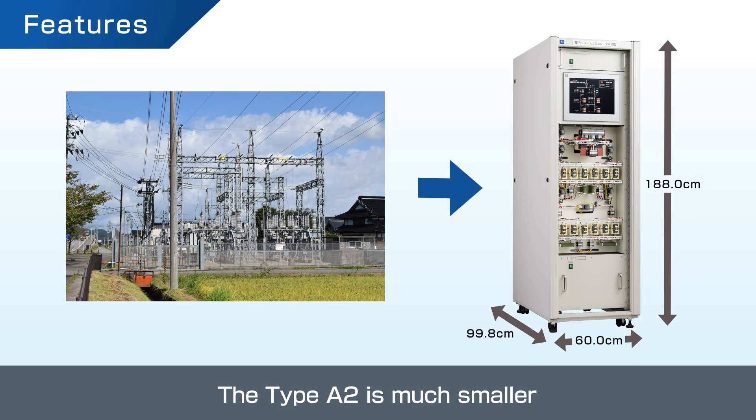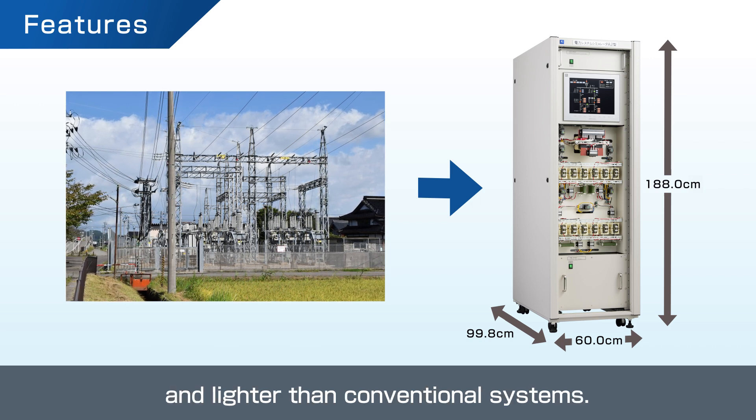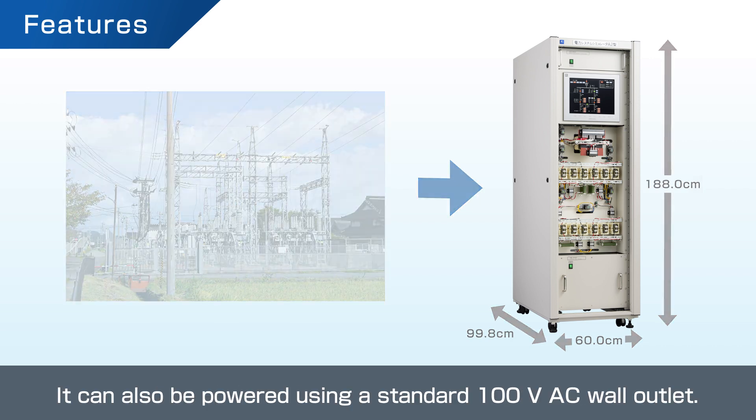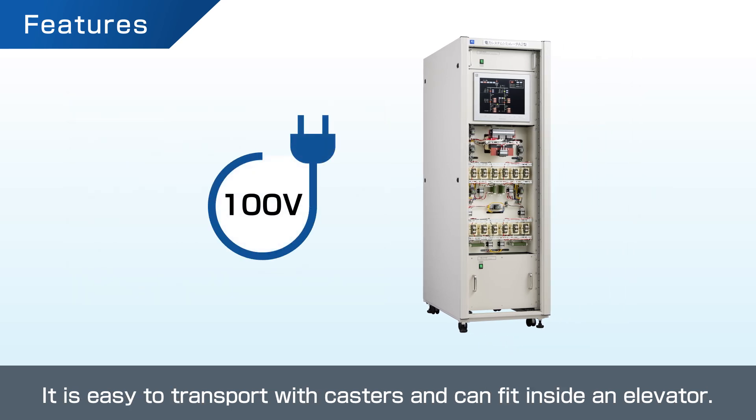The Type A2 is much smaller and lighter than conventional systems. It can be powered using a standard 100-volt AC wall outlet. It's easy to transport with casters and can fit inside an elevator.